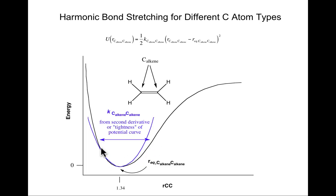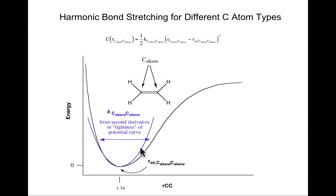The blue parabola approximates the real black curve. At short bond distances, the real curve rises more rapidly than the parabola, so I would underpredict the strain. Conversely, as I stretch the bond — say to 1.5 angstroms — I predict considerably higher energy on the blue curve compared to the black. I can adjust the force constant to do better on one side, but then I'll do less well on the other. The error derives from the nature of the functional form.